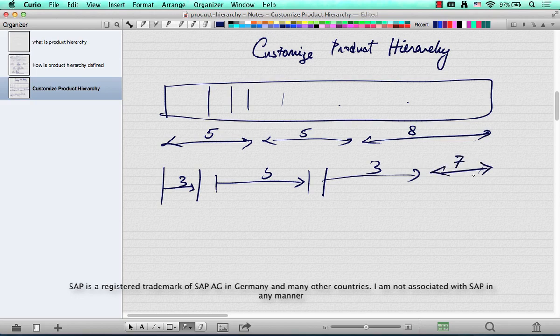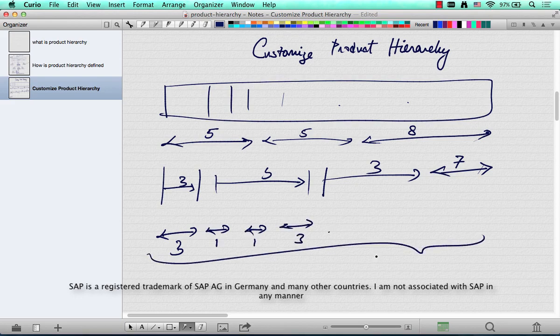At most you can have nine different subdivisions in product hierarchy. Like you can have 3 and then 1 and then 1 and then 3 and so on. You can have up to nine different levels in a product hierarchy. How do you do that?